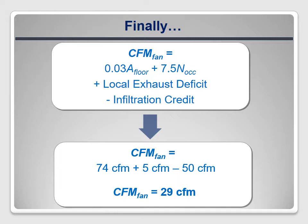One important point: these calculations must be done using a blower door test result after any air sealing is done. But it may be crucial to figure out if a system is needed before the work is done, so it can be included in the work scope and in the quote provided to the customer. Auditors must get good at estimating how much effect air sealing will have on the blower door reading. Be conservative — estimate a big reduction so you don't end up having to install a ventilation fan unexpectedly, possibly at your own expense.